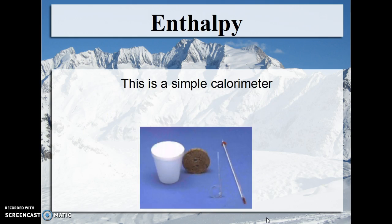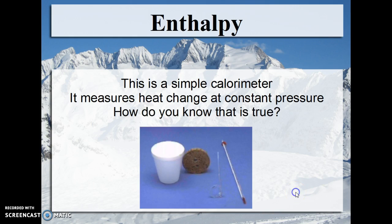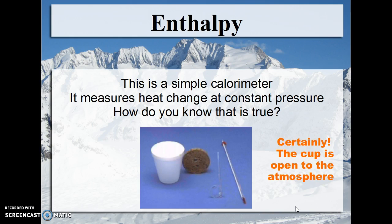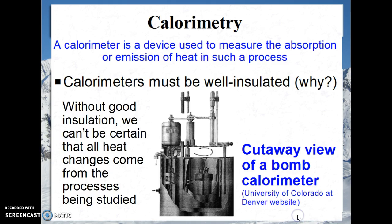This is a simple calorimeter — it measures heat change at constant pressure. We've got a styrofoam cup, a stirring mechanism, a thermometer or temperature probe, and a cover that these two things stick into the calorimeter from. The cup is open to the atmosphere, so the pressure will remain at atmospheric pressure during any reaction. A calorimeter is a device used to measure the absorption or emission of heat in such a process. Calorimeters must be well insulated — if you don't insulate them, you never know that all the heat change is coming from the process being studied. It could be coming from outside the calorimeter. In the absence of insulation, heat can go in or out; you want to keep it isolated.